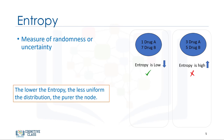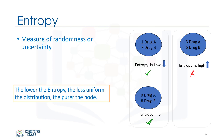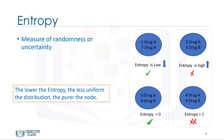Entropy is the amount of information disorder, or the amount of randomness in the data. The entropy in the node depends on how much random data is in that node, and is calculated for each node. In decision trees, we're looking for trees that have the smallest entropy in their nodes. Entropy is used to calculate the homogeneity of the samples in that node. If the samples are completely homogeneous, the entropy is 0, and if the samples are equally divided, it has an entropy of 1. This means if all the data in a node are either drug A or drug B, then the entropy is 0. But if half of the data are drug A and the other half are drug B, then the entropy is 1.